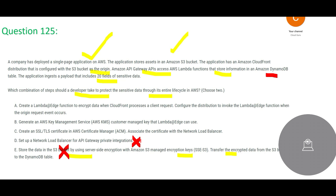Option C suggests creating a certificate and associating it with the Network Load Balancer. This certificate would provide encryption in motion, but since we are already using CloudFront, combining CloudFront with a Network Load Balancer and certificates is not the right approach here.